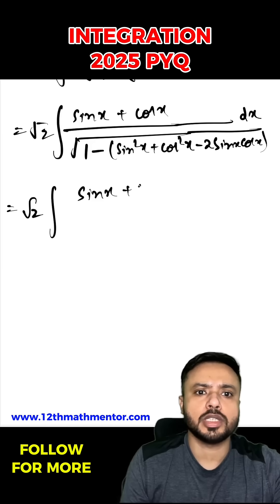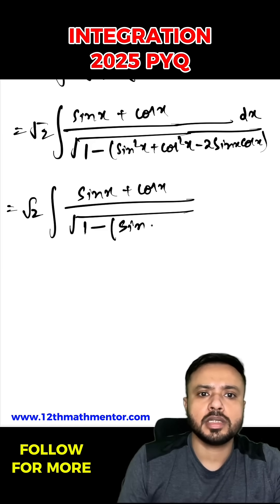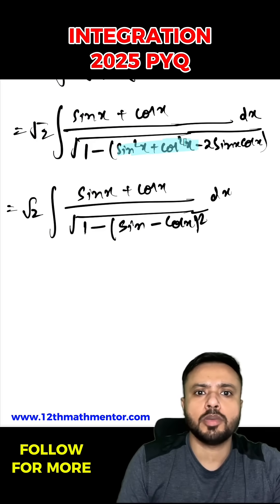So I can write it as root 2 sine x plus cos x upon root of 1 minus sine x minus cos x whole square dx. Here you can clearly see this is a square plus b square minus 2ab, so I have written it as a minus b whole square.